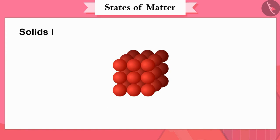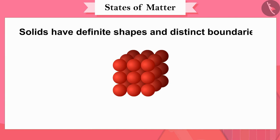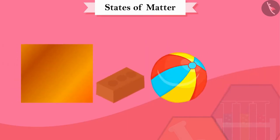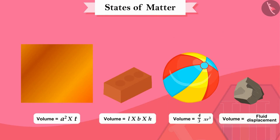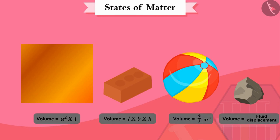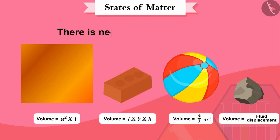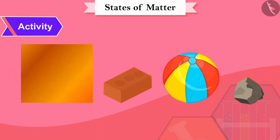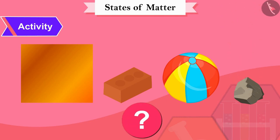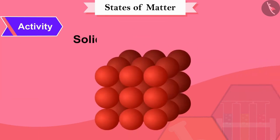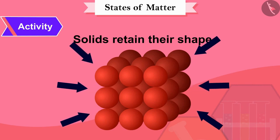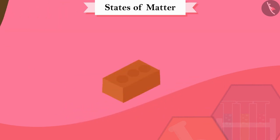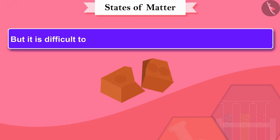We can say that solids have definite shapes and distinct boundaries. If we look at their volume, we will find that the volumes of all these objects are constant — that is, there is negligible compressibility. Now let's do a fun activity: try hitting these objects with a hammer, dragging or dropping them. Have the shapes changed? No — solids retain their shape even when force is exerted externally. Concrete can break when pressure is applied, but it is difficult to change their shape; therefore they are rigid.